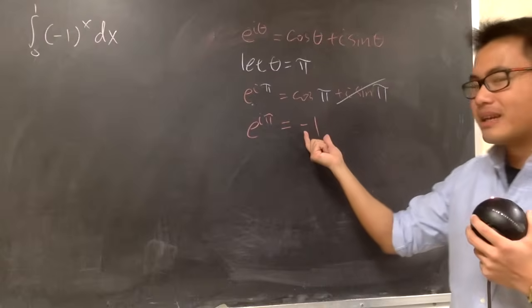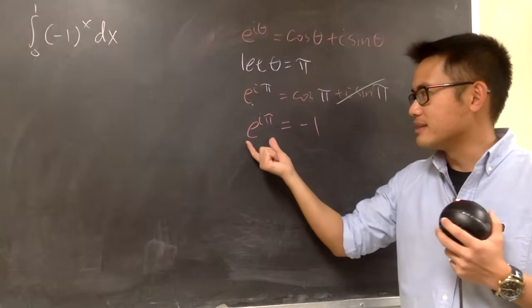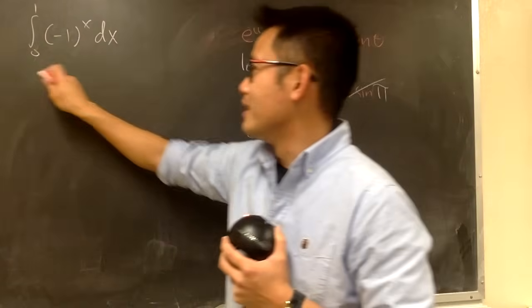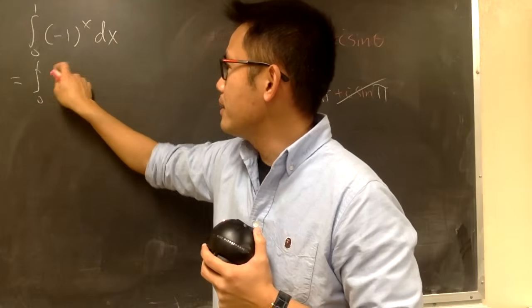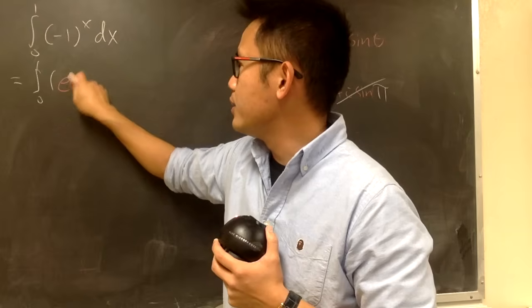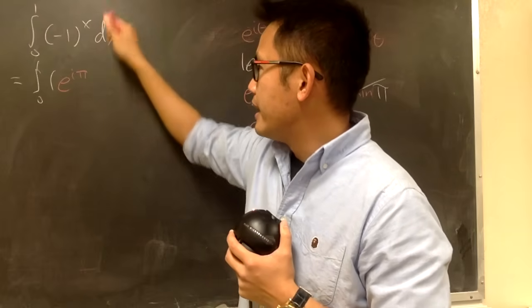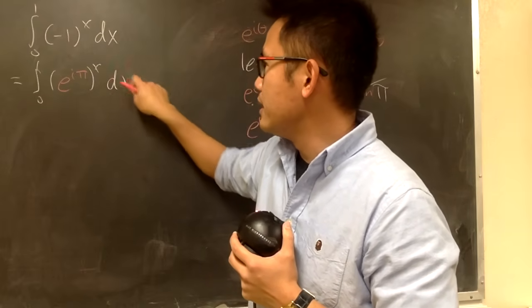And now, I will be looking at negative 1 as e to the i pi, and that's going to help us out. Let me continue. This right here, it's going to be the integral from 0 to 1, I will write down e to the i pi, and then raise to the x power dx, right?